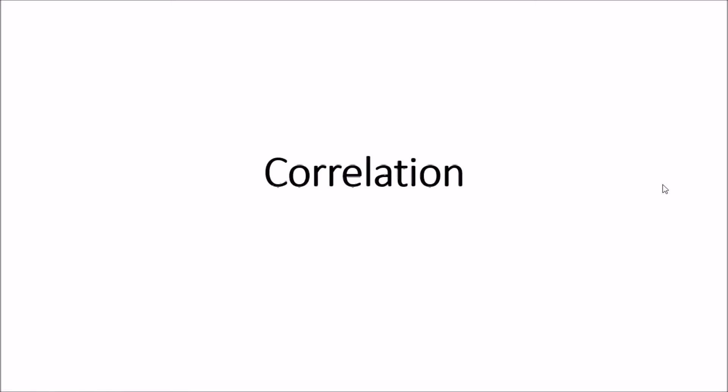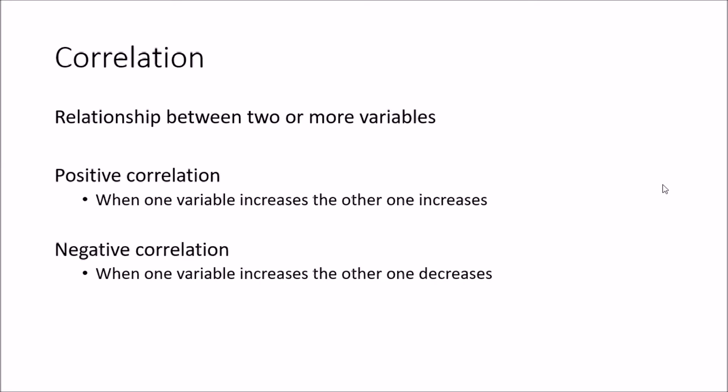Hi all, welcome to my channel on statistical analysis. In this tutorial we are going to look at correlation. Correlation is the relationship between two or more variables, and there are two types of correlations that we can identify.